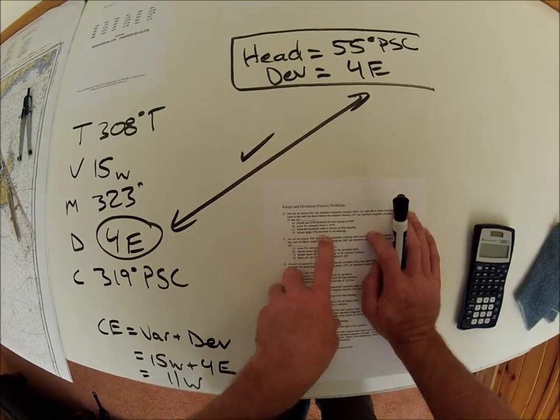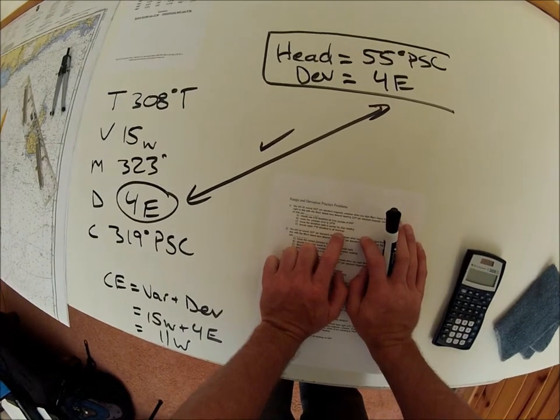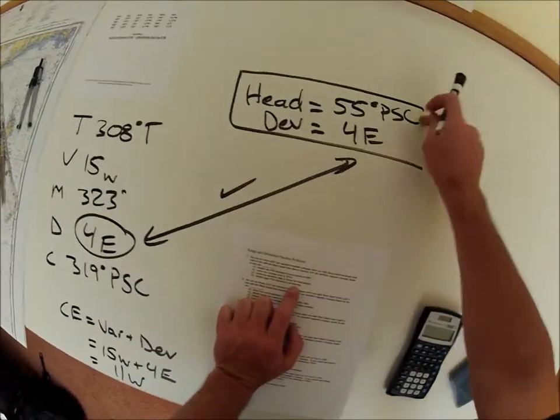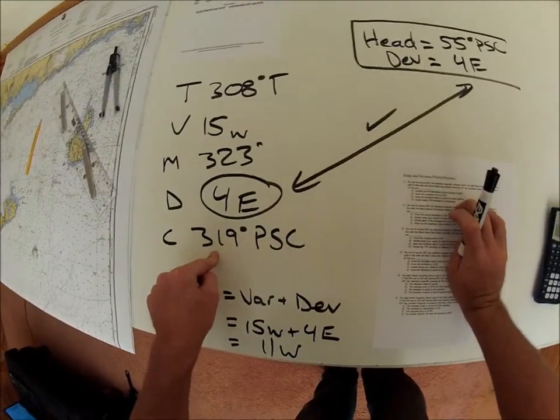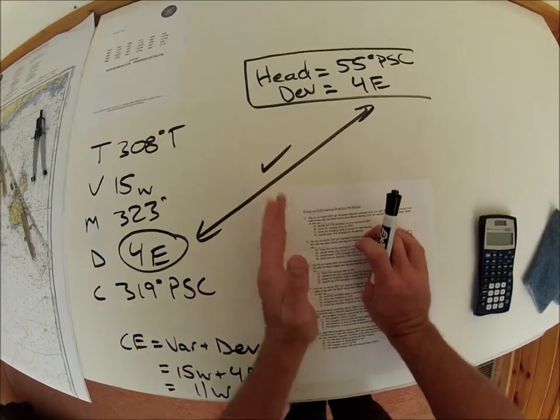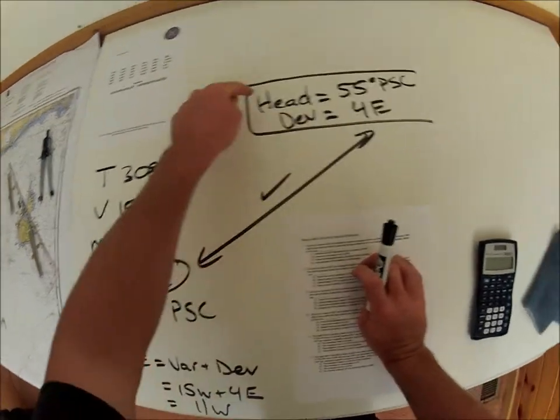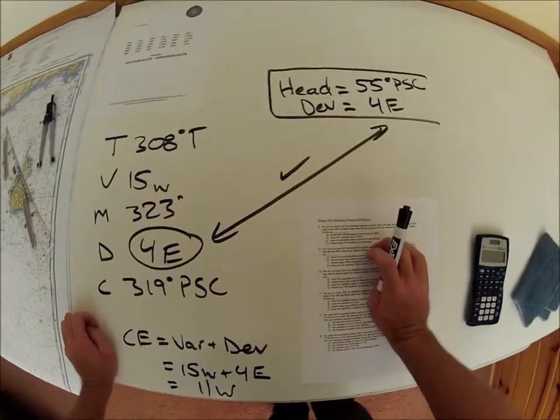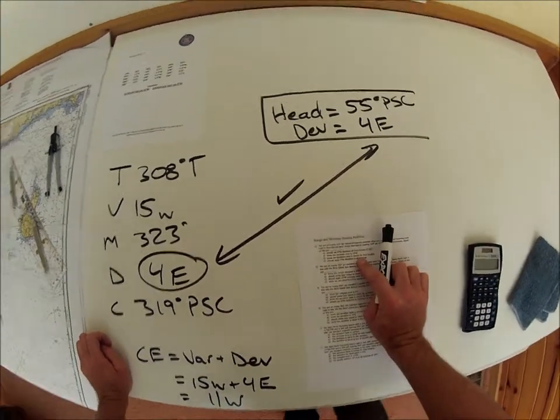Should apply 4 west deviation to all bearings. This, don't fall for this. You apply deviations to headings, not bearings, right? The heading of your ship is what dictates deviation. And that's why our heading was important in this problem. Okay, so the correct answer is C. You know the deviation table is correct for that heading.